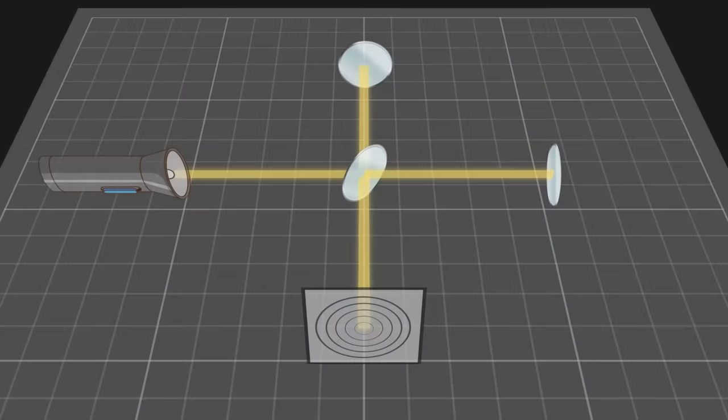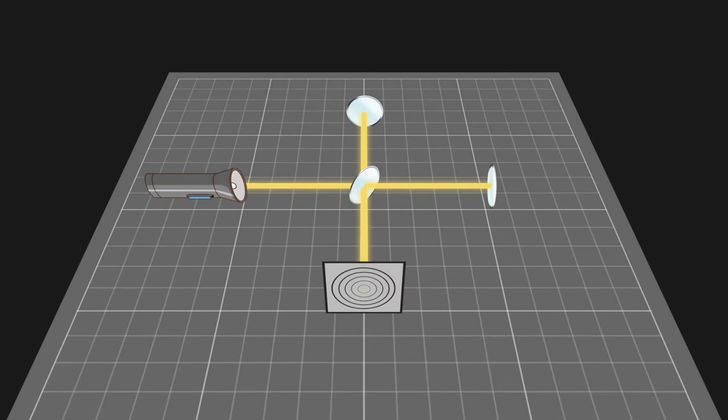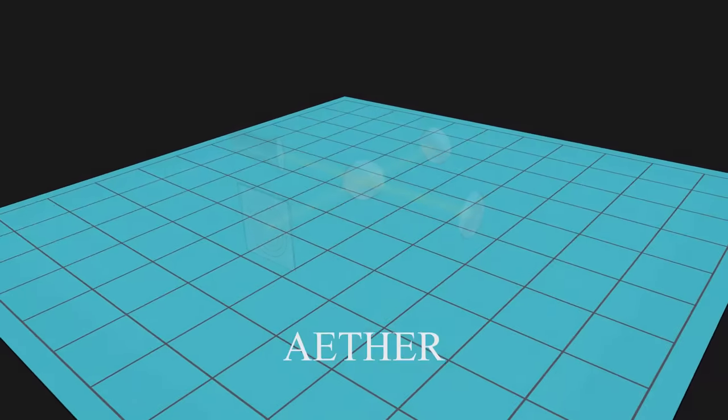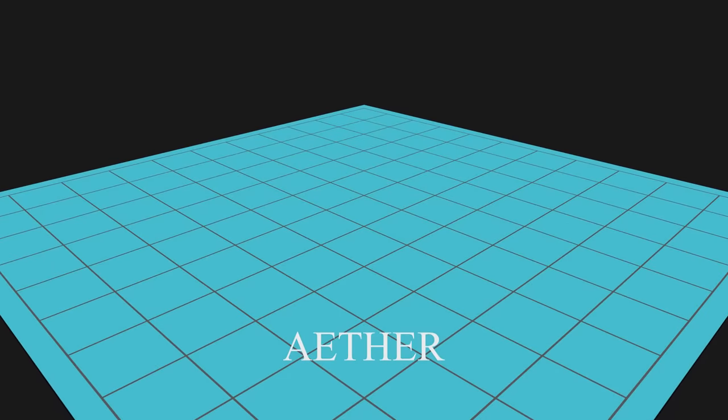This is the famous Michelson-Morley experiment, which replaces water waves with light. It assumes there is a medium called ether, permeating the whole universe, and acts as the carrier of light.